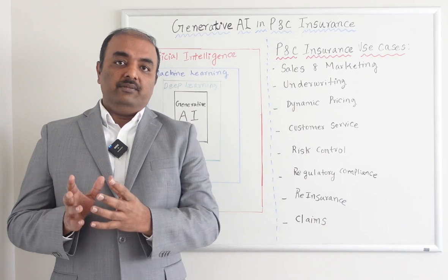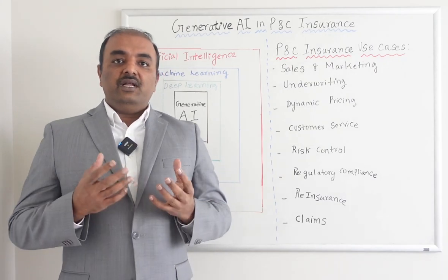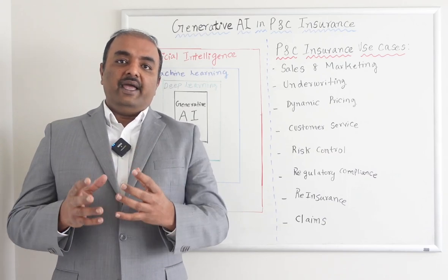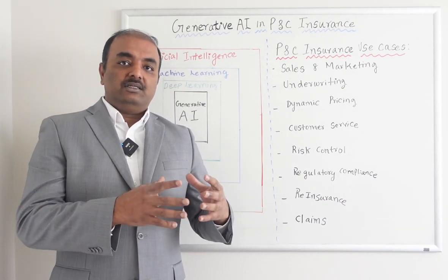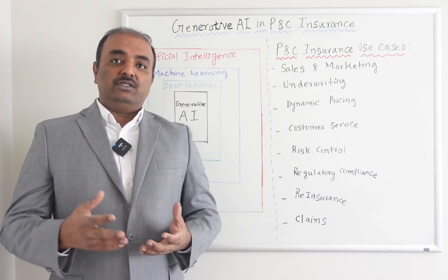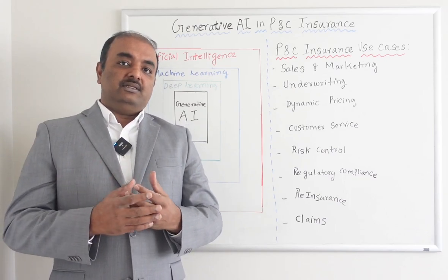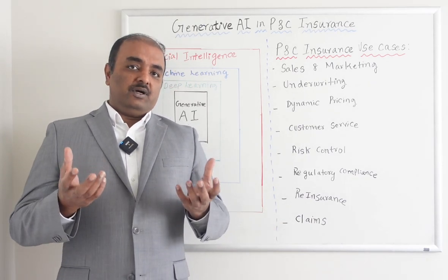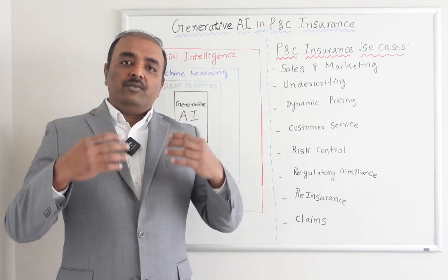Dynamic pricing allows systems to price automatically based on past history. Customer service is a very important factor — Generative AI can understand customer complaints or satisfaction and act automatically. Risk control helps prevent losses upfront instead of having claims in the future. Regulatory compliance covers sending data to the Department of Insurance through ISO. Reinsurance contracts with third-party companies can also leverage Generative AI. In claims, it can help avoid fraudulent activities by automatically reading large amounts of documentation.